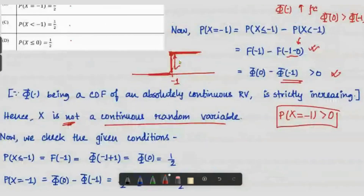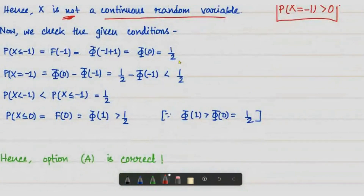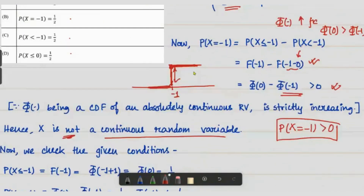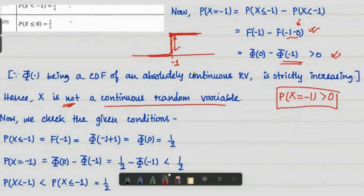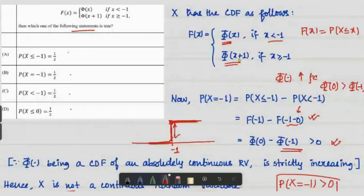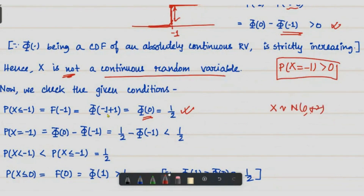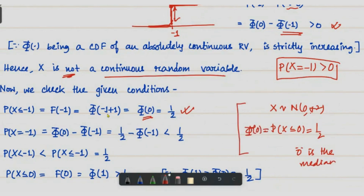Now we check the given conditions. P(X ≤ -1) is F(-1) by definition of the CDF, which is Φ(x+1) evaluated at x = -1, giving Φ(0). Since X follows a standard normal distribution, Φ(0) equals one-half, because zero is the median. So P(X ≤ -1) = 1/2.